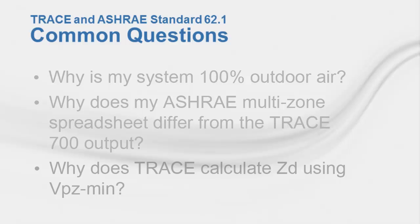We also often get the question of why TRACE calculates Z sub D using minimum stop air flows. In the standard, it defines V sub PZ for VAV systems as the minimum expected primary airflow for design purposes. TRACE is being conservative in its assumption that the minimum expected airflow in the critical zone at design conditions equals V sub PZ min. The airflow rates using the ventilation rate procedure in 62.1 should be considered minimum outdoor airflow rates, so TRACE uses the minimum stop airflow to ensure the proper amount of ventilation is supplied to meet the critical zone even in worst-case conditions—when system airflow is at design rates and the critical zone airflow is at minimum stop.